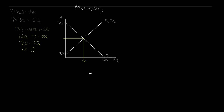Next, we need to figure out the market clearing price for a quantity exchanged of 12. We take this quantity and put it back into either the demand or the supply equation. Using supply: price equals 30 plus 5Q, Q is 12, so we get 30 plus 5 times 12, which gives us a price of 90. So let's write that point as our starting reference point.